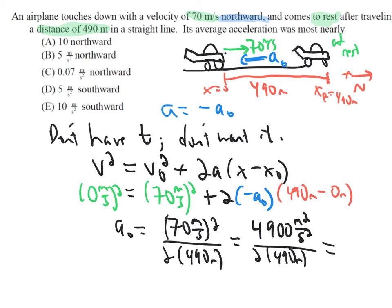We do some canceling. This over this leaves 10, 10 over 2 leaves 5 meters squared per second squared over meters is meters per second squared. So the magnitude is 5, meaning that we're at either this one or this one, but of course